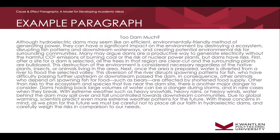This diversion of the river disrupts spawning patterns for fish who may have difficulty passing upstream or downstream past the dam. In consequence, other animals who depend on the spawning fish for food—such as bears—are affected by a shortened food supply. Other than risks to the ecosystem and species near the dam site, there is another major danger to consider. Dams holding back large volumes of water can be a danger during storms and when they break. With extreme weather such as heavy snowfalls, heavy rains, or heavy winds, water behind the dam may spill over and fall uncontrolled towards downstream communities. Due to global warming, scientists predict even more extreme weather patterns for the future. With these concerns in mind as we plan for the future, we must be careful not to place all our faith in hydroelectric dams and carefully weigh the risks in comparison to our needs.